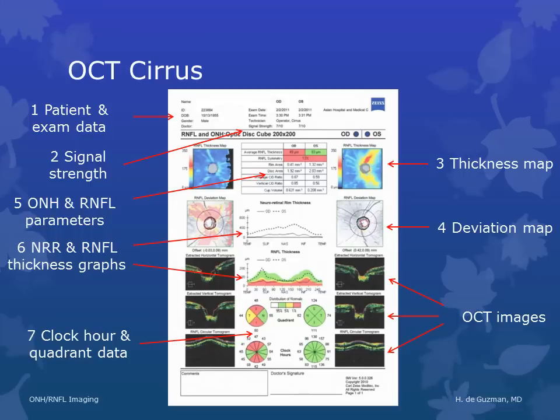This is an example of the Cirrus printout. First, look at the patient and exam data — check for correct spelling of the name and proper birth date. Check the signal strength. Then look at the thickness map and deviation map. Then the RNFL and ONH parameters, the neuroretinal rim and RNFL thickness graphs, and then the quadrant and clock hour data.